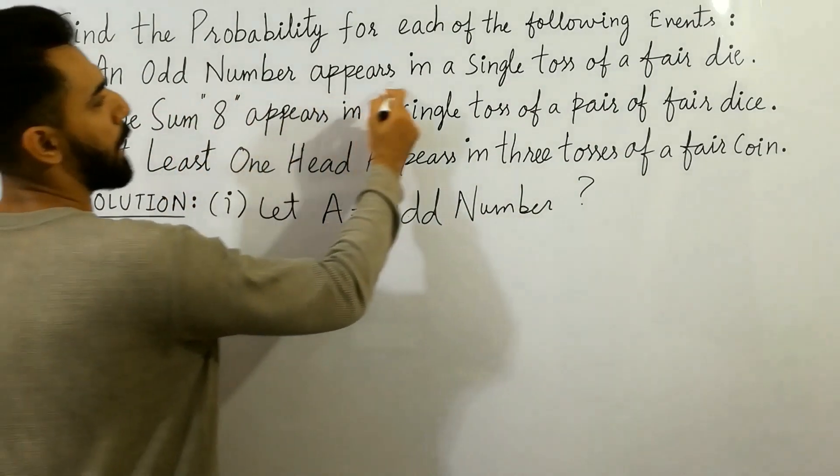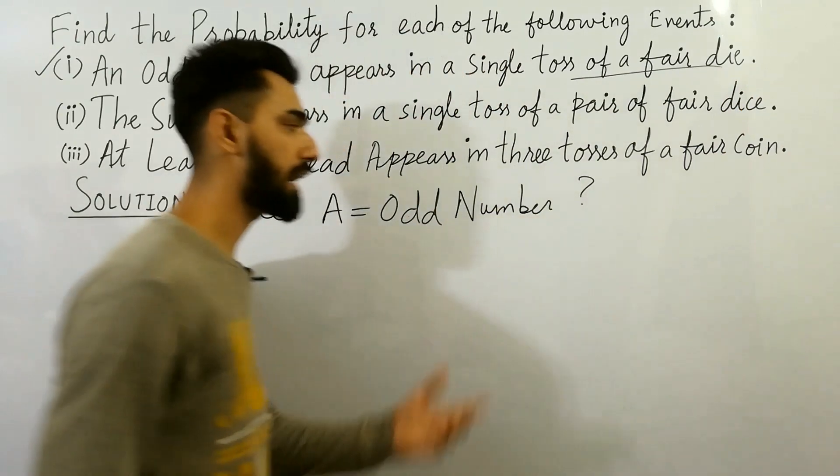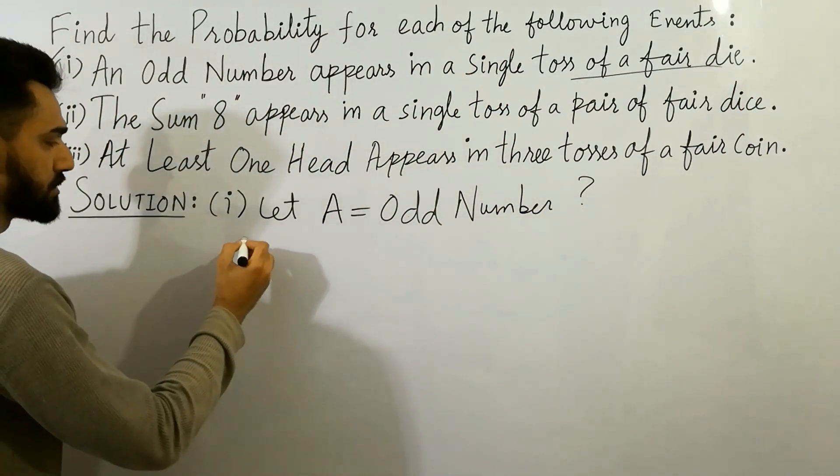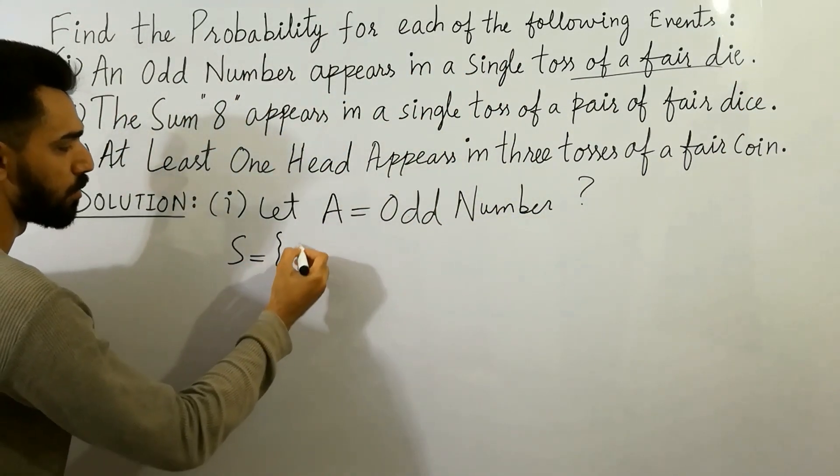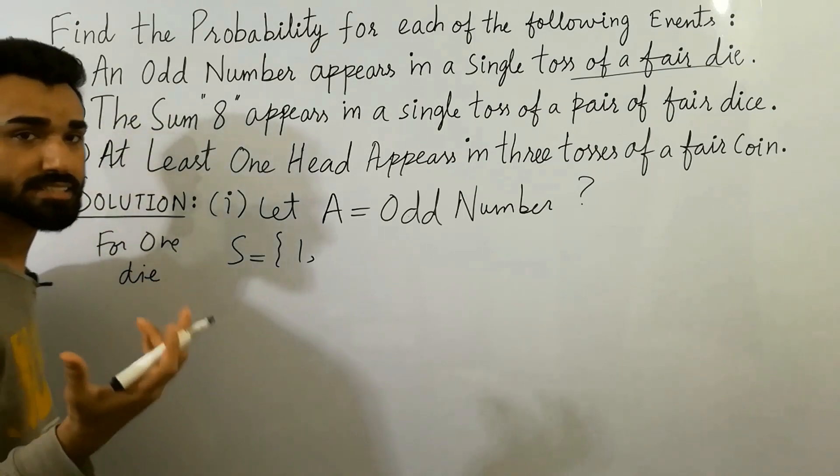Next statement is here, appears in a single toss of a fair die. You know that a die has six sides. For one die, we have only six sides.